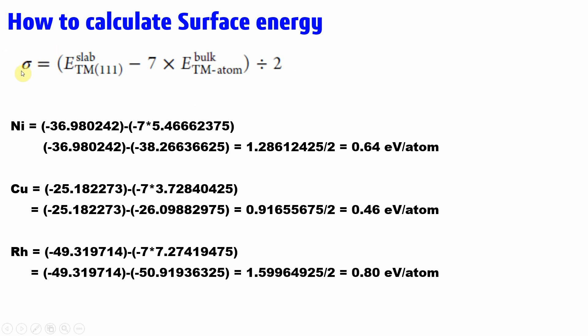This is the formula for the calculation of the surface energy. We can choose the nickel transition metal (111) surface. Seven is the number of atoms present in the (111) surface layer. This is the energy per atom of the corresponding transition metal divided by two. If you do this calculation you will get 0.64 eV per atom.